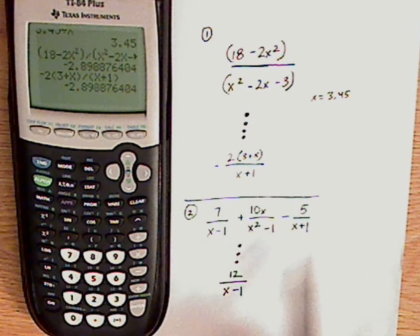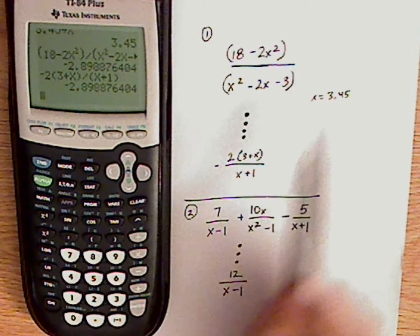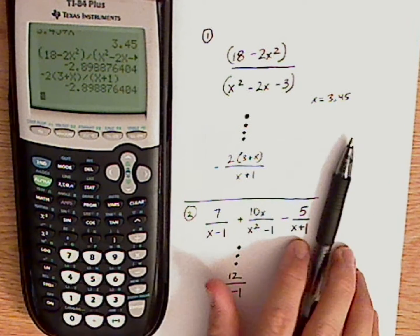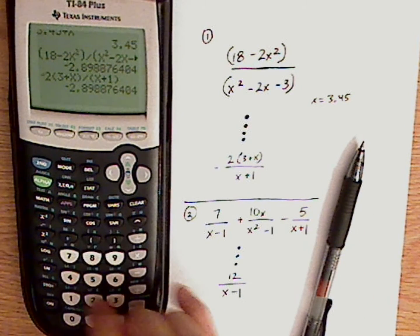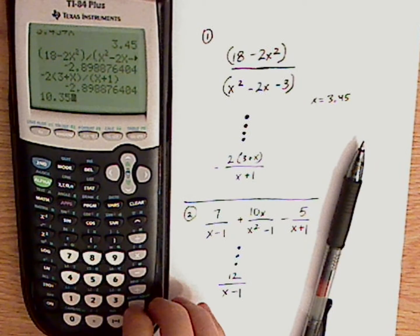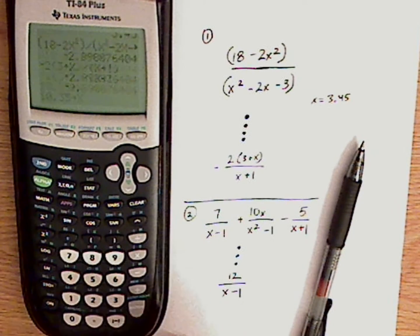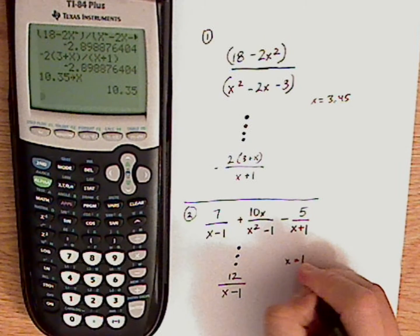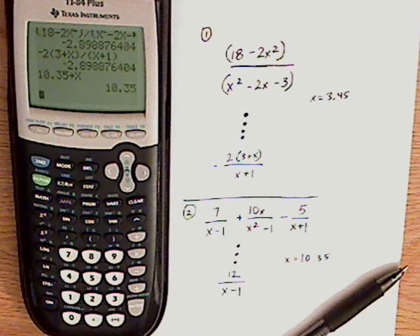Now let me do this one. Now I'm not going to change my x value because it's something really weird, 3.45. But if I really wanted to, I can change it so that it's 10.35. And then push the store button. Again, you don't have to do this. I'm just trying to make a point. So x equals 10.35.